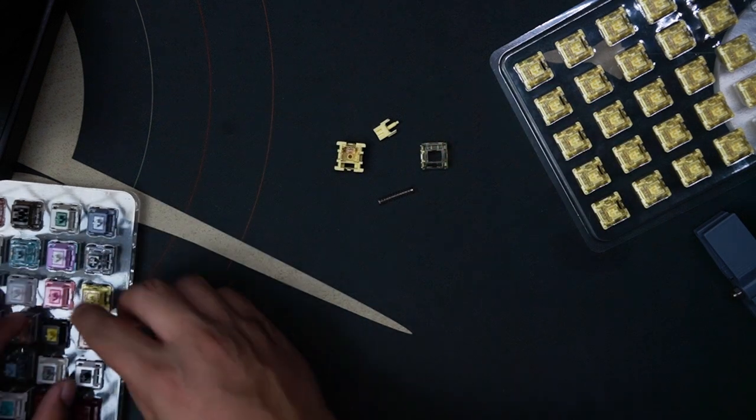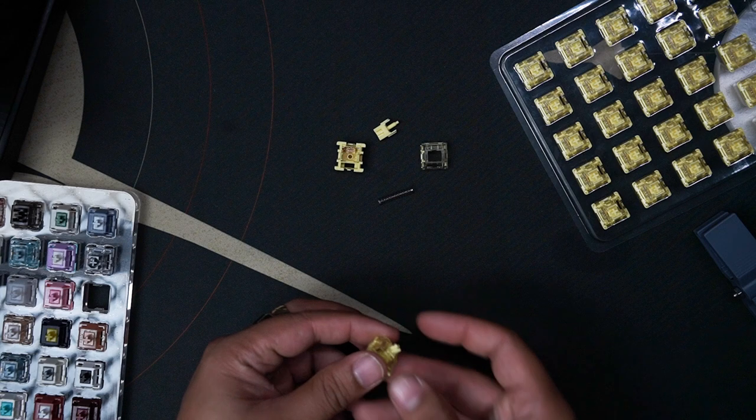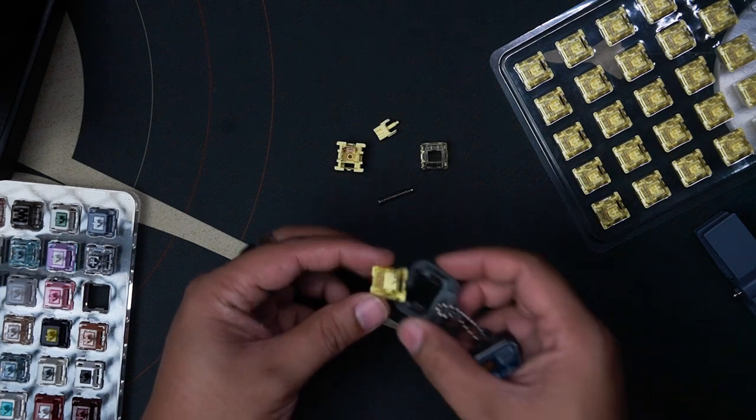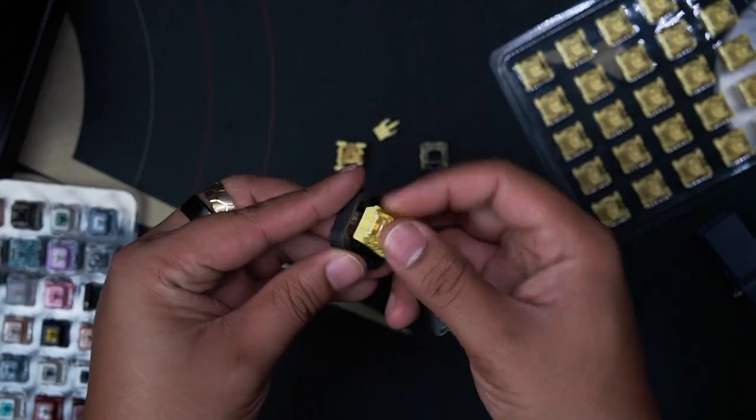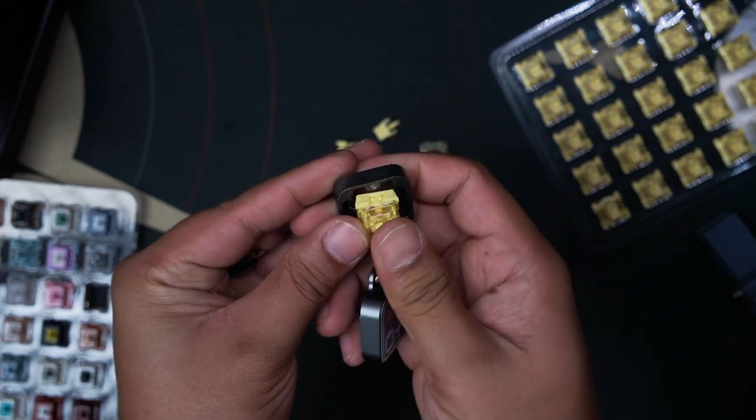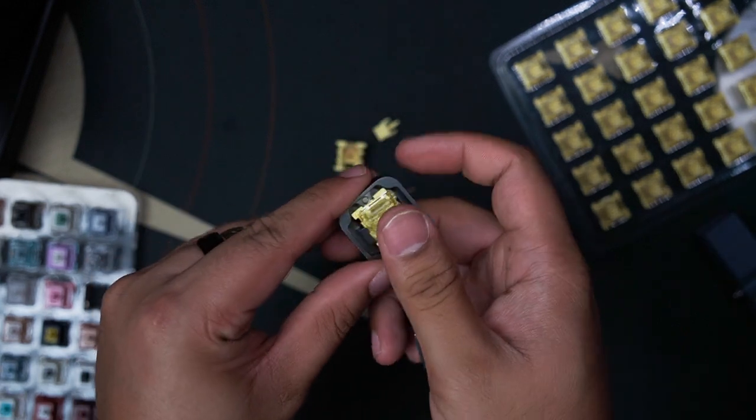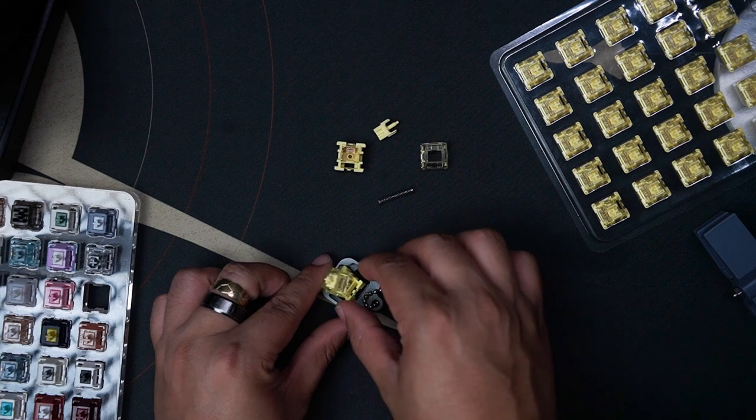They also lubed the rails already on the bottom housing. And the stem. Which wasn't really specified if it was Krytox 205 grade 0 or not. But I'm guessing it is based on the other Switches that they sent.